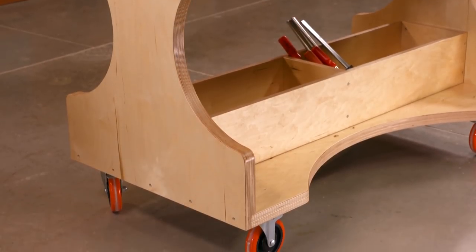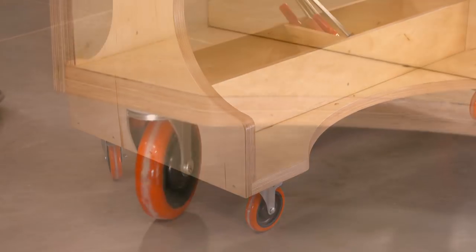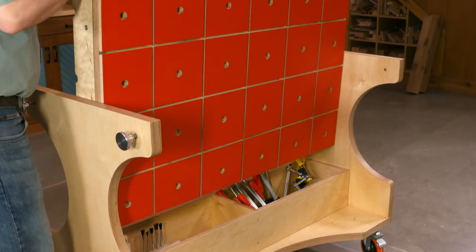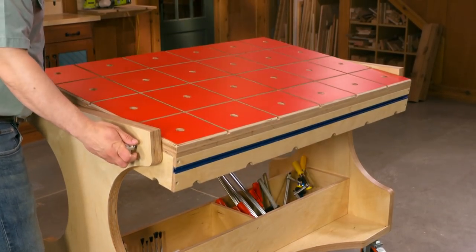Constructed of 3/4 inch Baltic birch plywood and equipped with 5 inch locking casters, this revolving top mobile cart has two work surfaces utilizing the full capacity of each side.